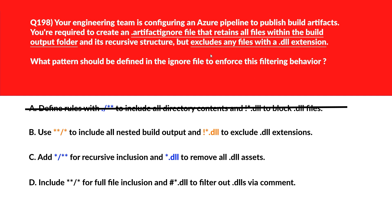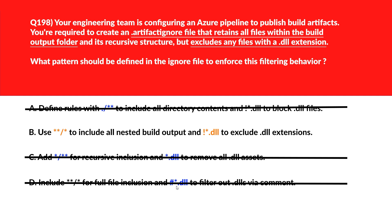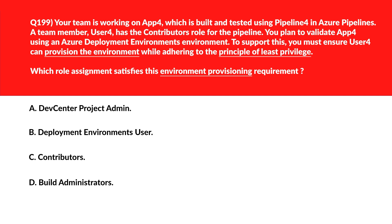We need to exclude .dll extensions — the exclamation mark is the negation operator. Option D uses `*//**` which includes only one level of subdirectories and doesn't exclude .dll files. Another option uses `#*.dll` — the hash symbol denotes a comment, so it's ignored and has no effect. We'll lock option B as the right answer.